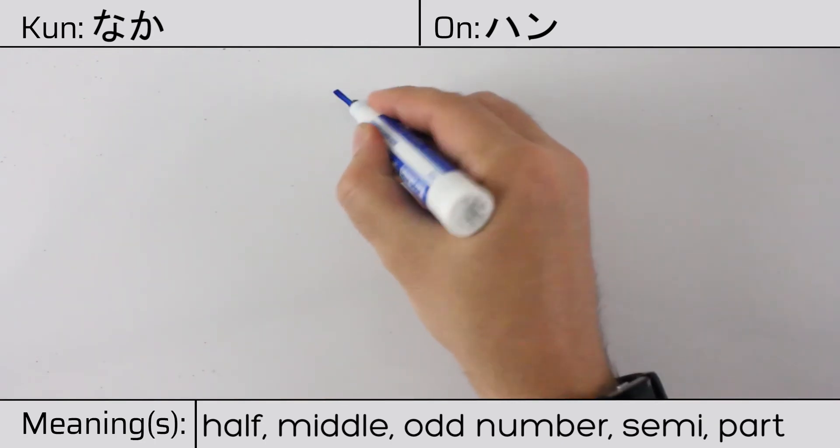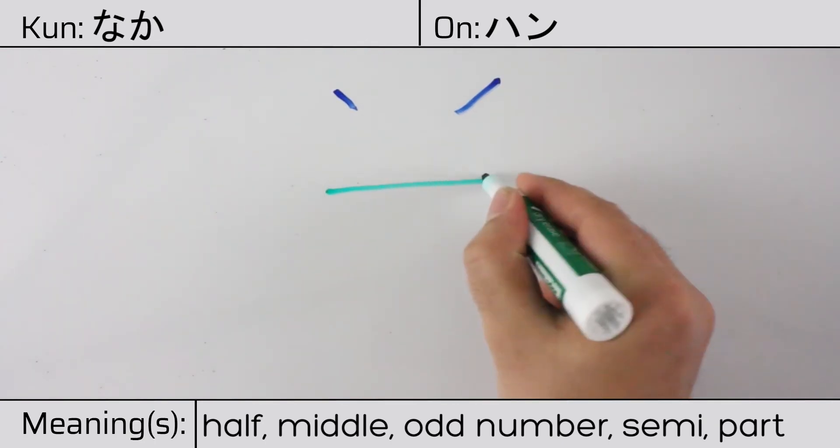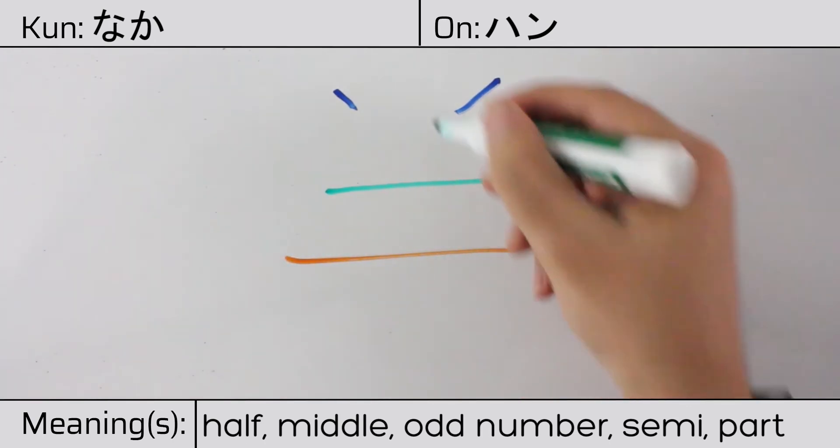You can remember this kanji by the following hint: object divided in two halves, left and right.